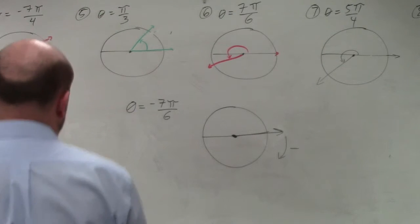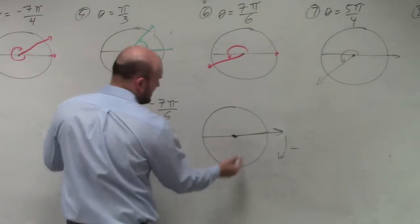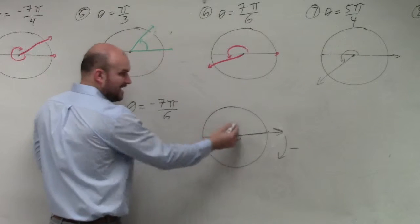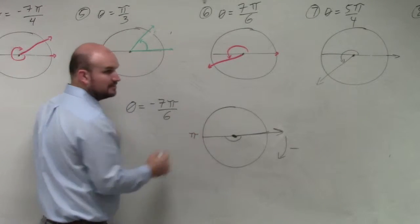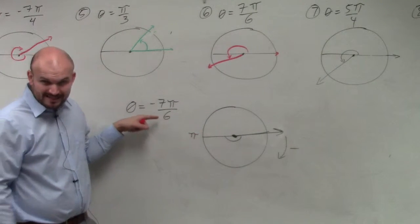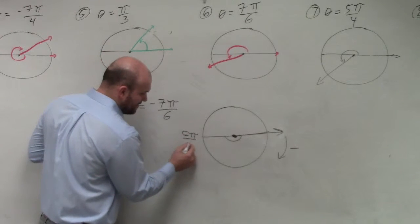We have identified our terminal side. What we need to understand is, again, going back to some basic tenets. Halfway around a circle is pi. However, we're breaking up pi into 6, so that's the same thing as 6 pi over 6.